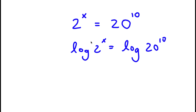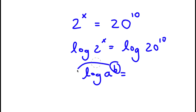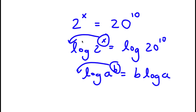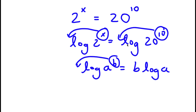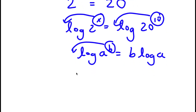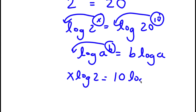Now, if I have something in the form log a to the power of b, I can move this exponent b to the front — so this equals b times log a. In this case, log 2 to the power of x: I can move x to the front. And log 20 to the power of 10: I can move 10 to the front. So now I have x times log 2 is equal to 10 times log 20.